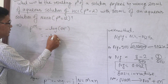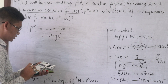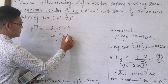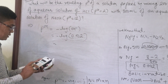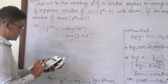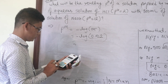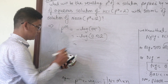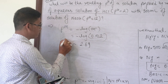Now we have the negative log formula. The final OH minus concentration value is 0.002. We apply negative log of 0.002, and the result is 2.699.